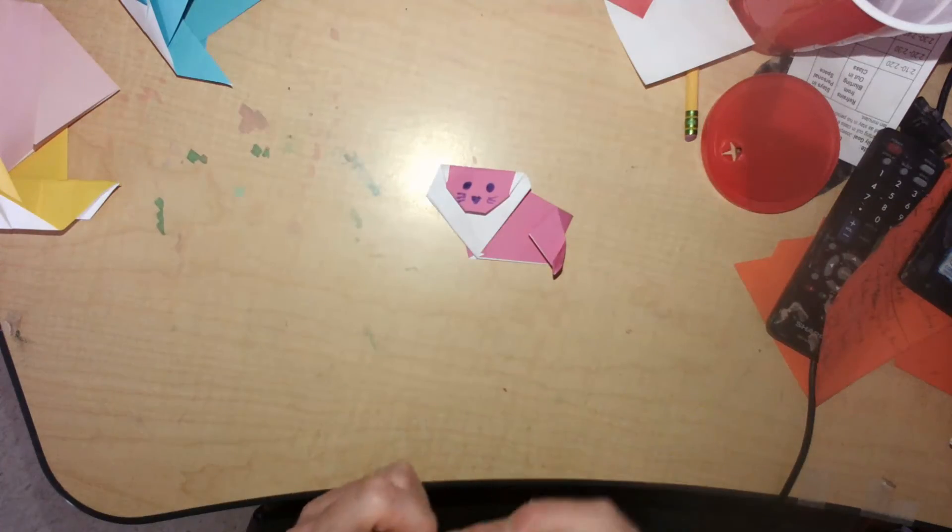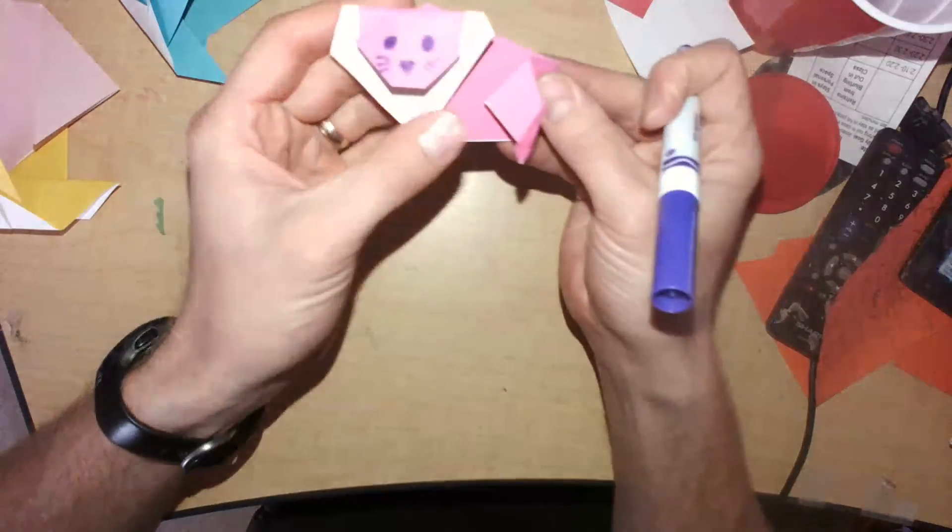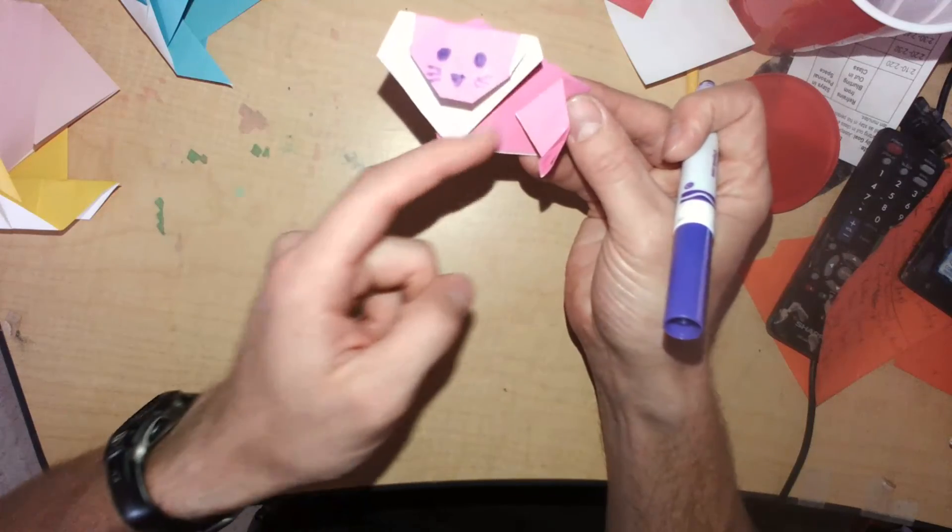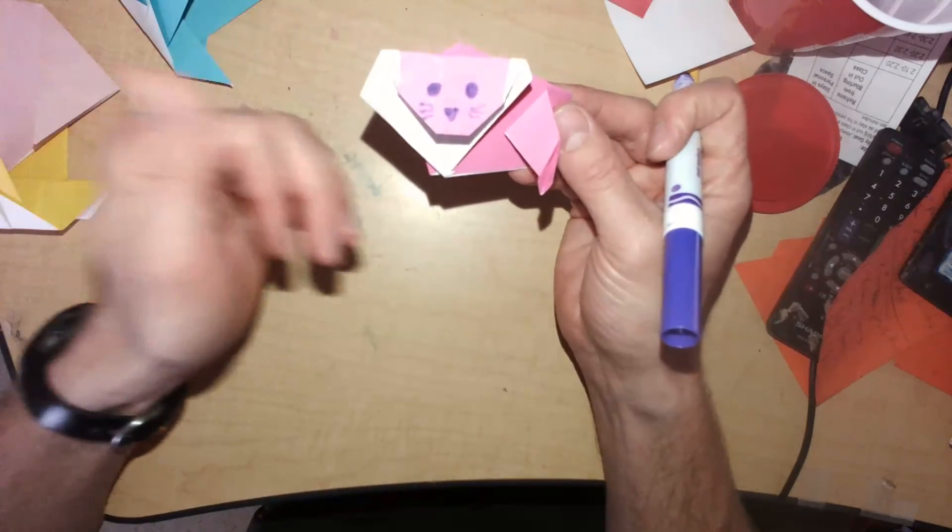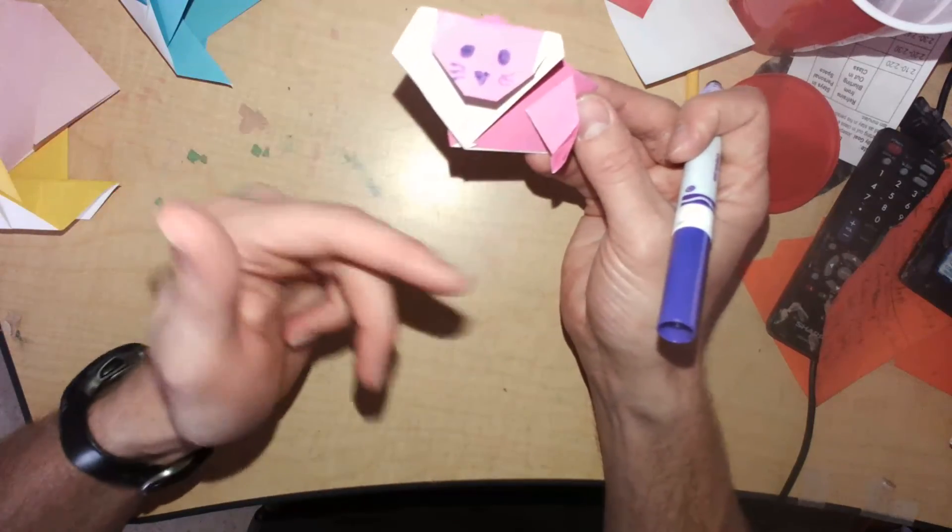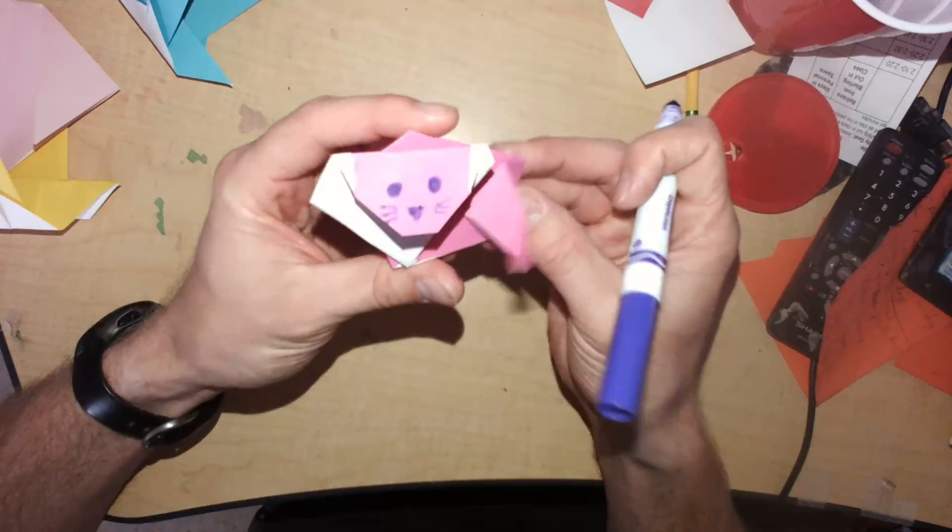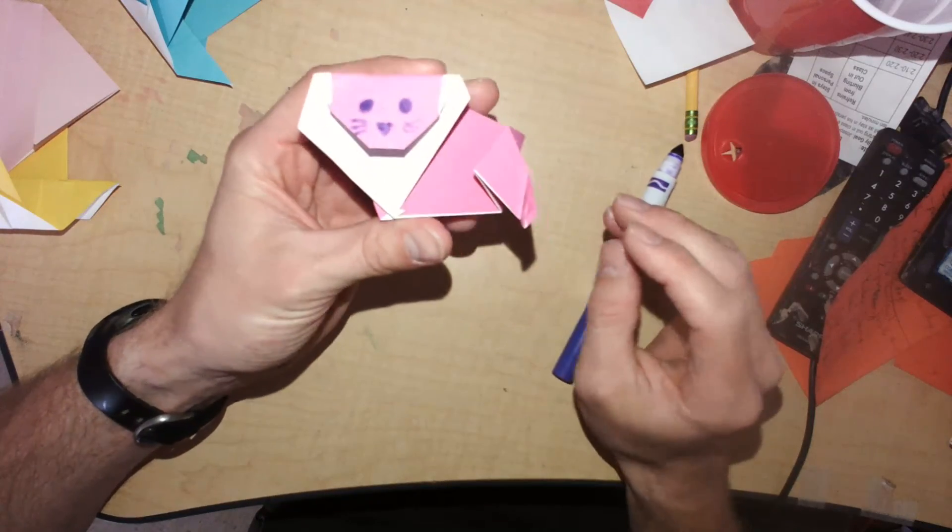And there is my lion with its mane. Or you could make it like a cobra snake and that's like the frill around it. But there is our lion or snake origami folding.